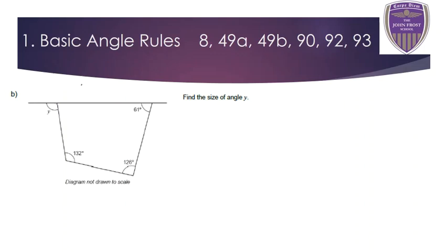Part B then. I'm asked to calculate the size of angle Y, which is on the outside of the shape — it's called an exterior angle. In order to help me find that, I need the angle that's next to it on the straight line. So again, these two angles here must sum to 180 degrees.